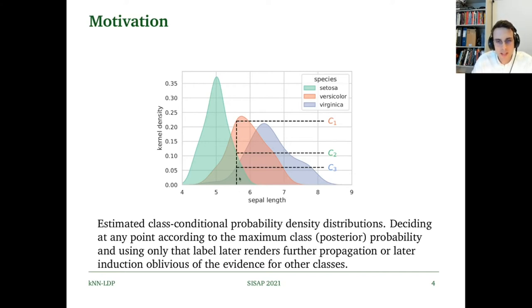If we had some query point here at 5.6 and took the maximum class posterior probability at this point, we would lose more than half of the label information—valuable information which could be used downstream in the propagation.